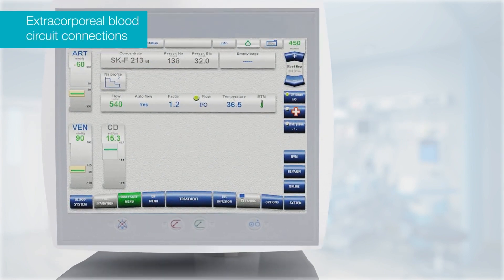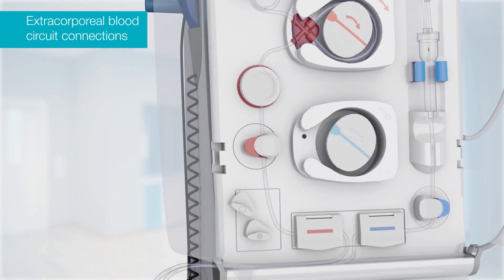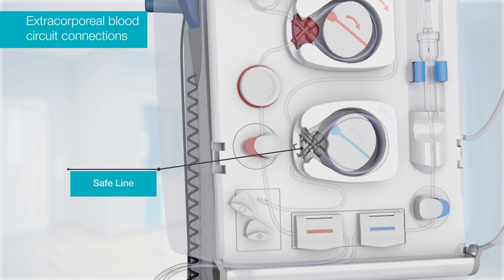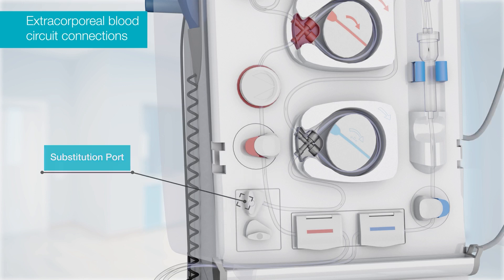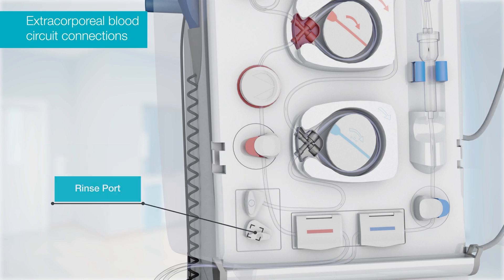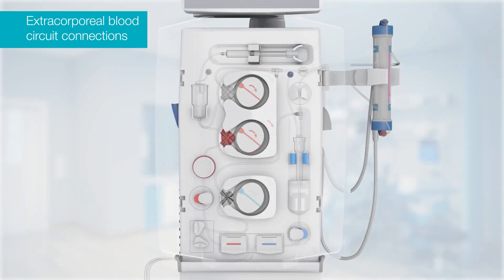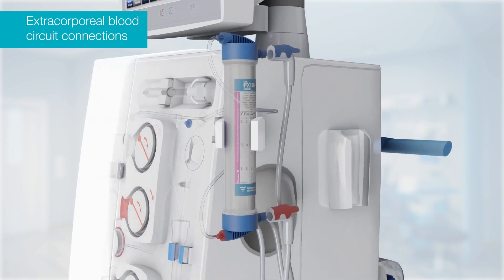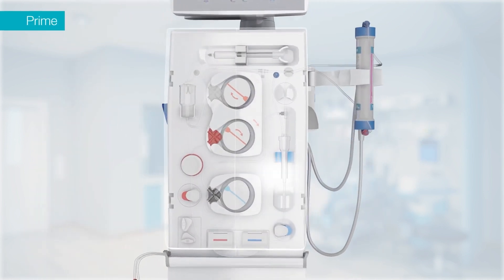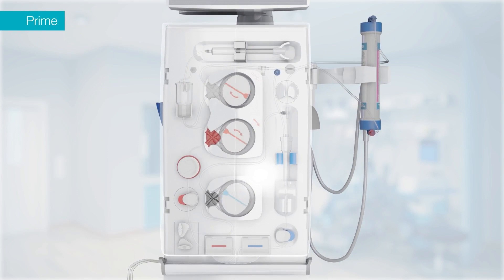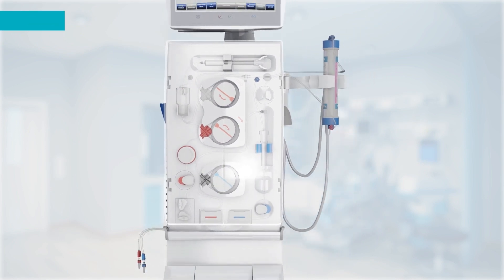For making the extracorporeal blood circuit connections, make the connections in the following sequence: connect the safe link spike into the machine — the machine will beep. Attach the online module to the access line. Connect the bottom of the safe line into the substitution port. Connect the venous line to the rinse port. Ensure all lines are unclamped and close the door. Attach cufflinks: blue to top blue and red to bottom red. Once the connections are complete, the machine will start to prime. This completes your connections of the 5008S therapy system.